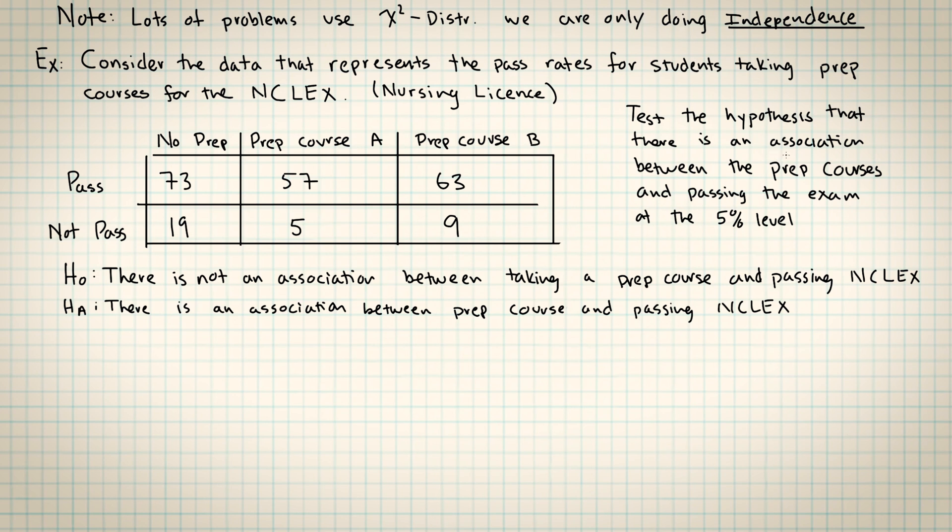Anytime you're solving a problem in a statistics class and you're asked to test the hypothesis that there is an association, the null hypothesis is always going to be that there is not an association, and the alternative hypothesis is always going to be there is an association. When you're solving these problems, it's really important that you include the context of the problem. It's tempting for students to just write null hypothesis association, and then for the alternative hypothesis they'll just put no association. Please include the context so that it's really clear what the variables are and that you understand what the problem is actually talking about.